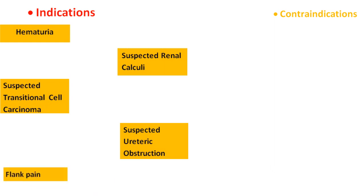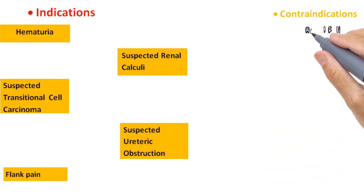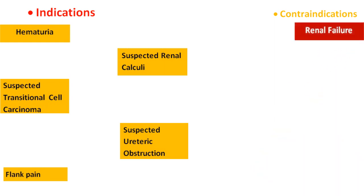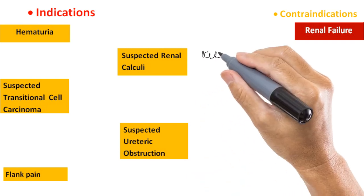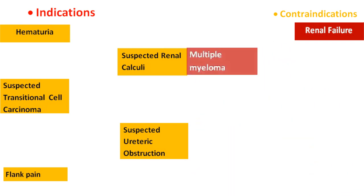However, it is advised to avoid performing intravenous urography on the following set of patients. Patients with suspected or confirmed renal failure — because it is the kidneys that excrete the contrast media injected in IVU, if contrast media is injected into a patient with damaged kidneys, the patient is unable to excrete it, which can lead to fatal effects. It is also avoided in patients suffering from multiple myeloma, a cancer of the plasma cells in the blood, which causes an increased amount of calcium in the blood that affects the functioning of the kidneys.